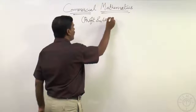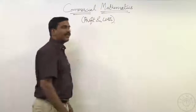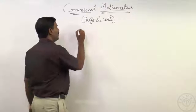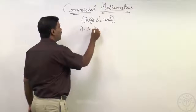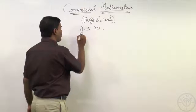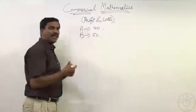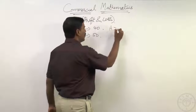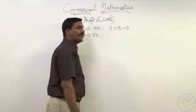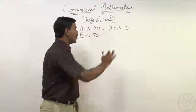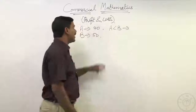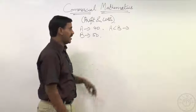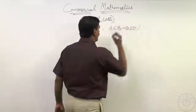What we understand from profit and loss we will look at a little later. If A got 40 marks in an examination and B scored 50 marks, we looked at calculations like A is how much percentage less than B. A got 10 less than 50, so 10 on 50 is 20 percentage less. So A is 20 percentage less than B.